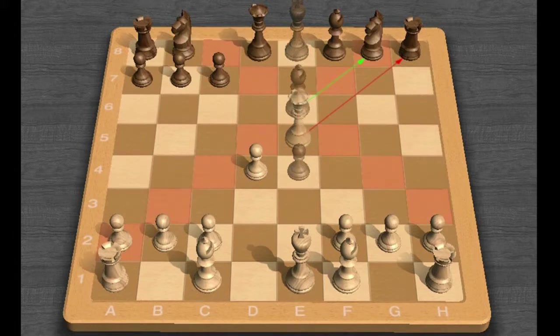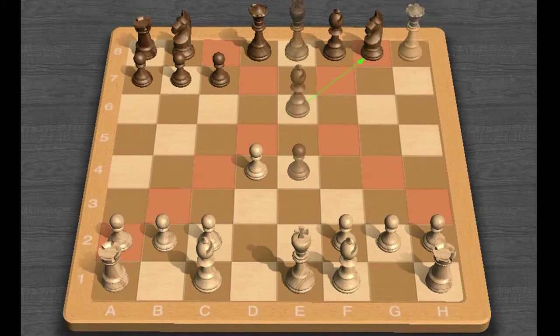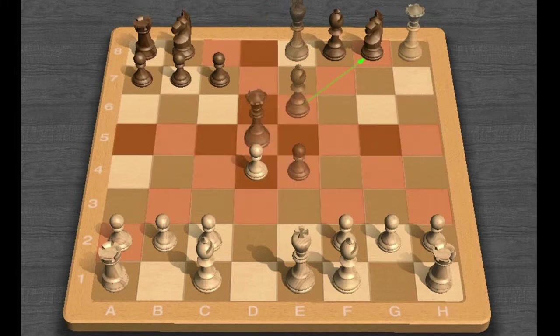White now takes the Rook in the corner, Queen captures H8, Black then centralizes, Queen D5, and I think he's got a good game.